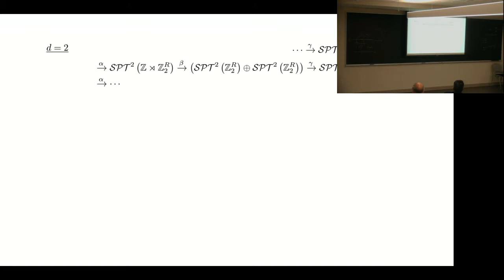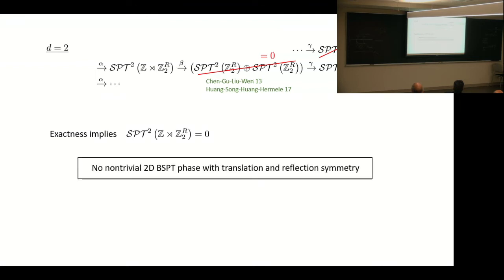We can do similar things in higher dimensions. In d equals 2, we know these two terms are trivial, according to known results. So by exactness, we can deduce that the term in between them must be zero as well. Physically, the statement would be there is no non-trivial 2D bosonic SPT phase with translation and reflection.